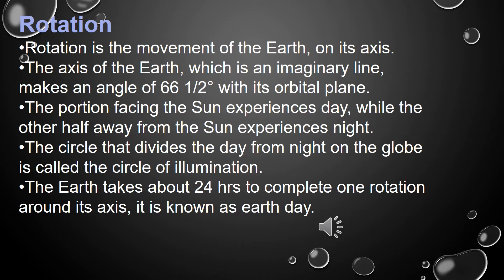The portion facing the sun experiences day while the other half away from the sun experiences night. The circle that divides the day from night on the globe is called the circle of illumination. The earth takes about 24 hours to complete one rotation around its axis, and this is known as Earth Day.